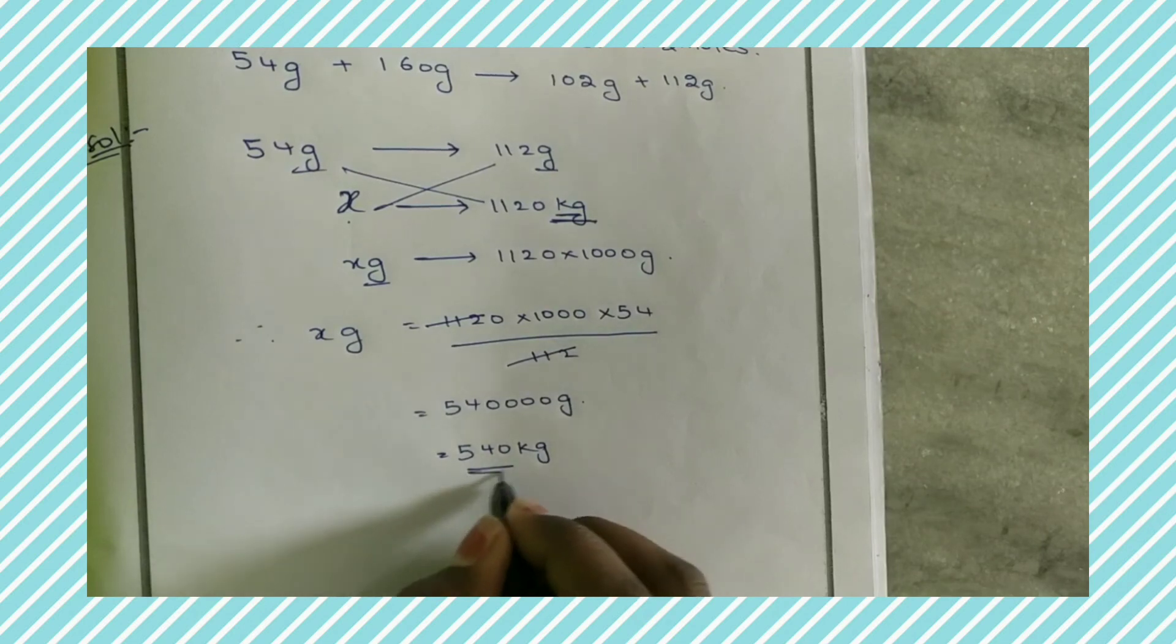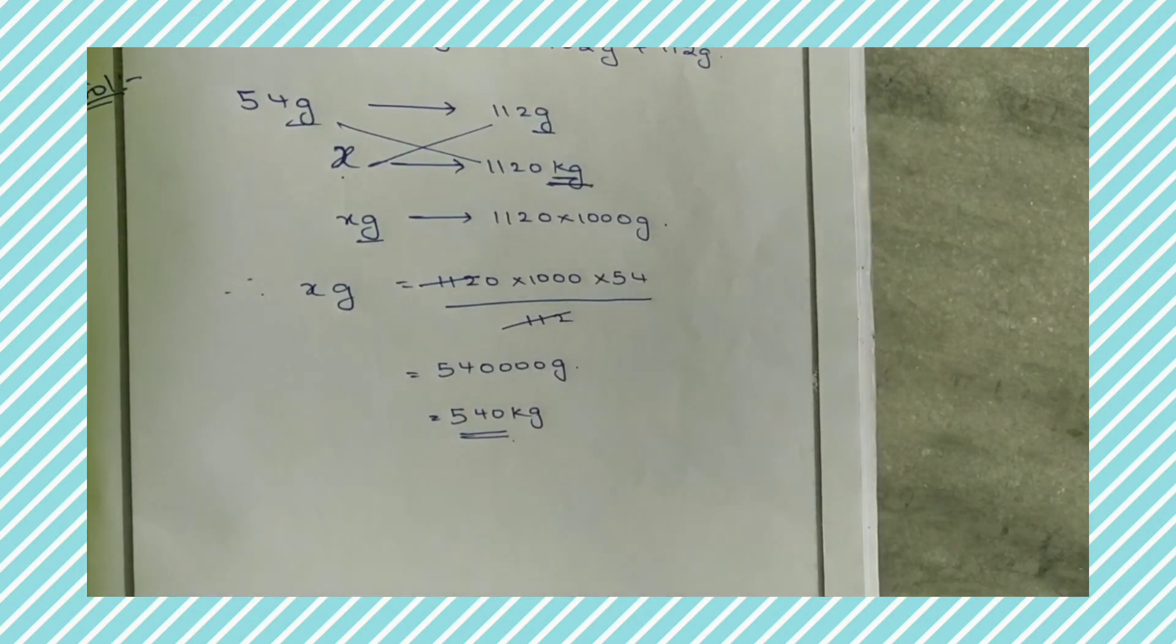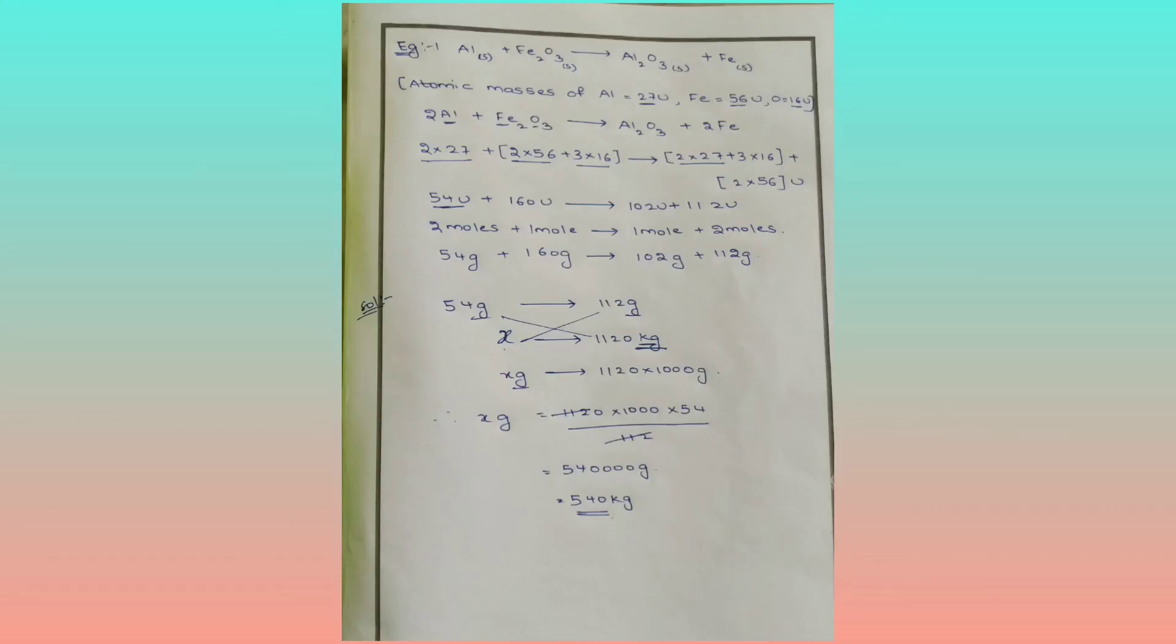If we do cancellations we will be getting the answer as 540 kilograms. So for 1120 kilograms of iron, 540 kilograms of Aluminum is required.